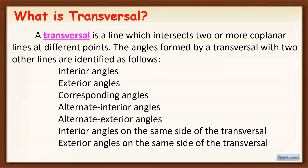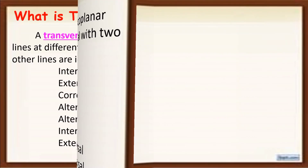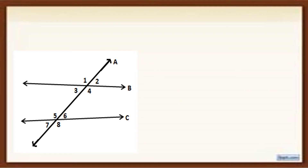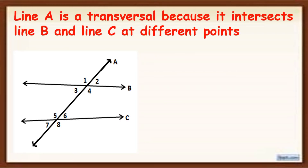I'm going to show you examples of these following angles. Line A is a transversal because it intersects line B and line C at different points. Remember, a transversal is a line that intersects two or more coplanar lines. So in this figure, line A is a transversal.